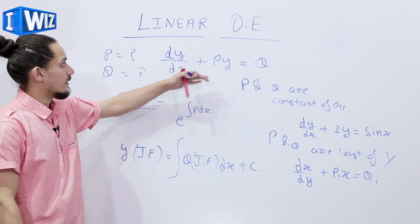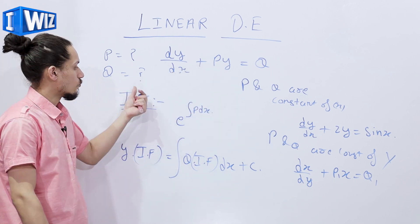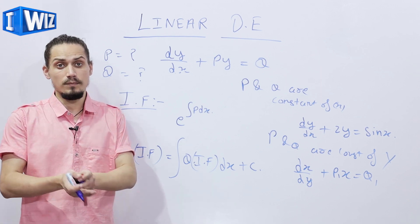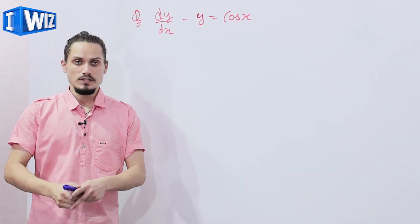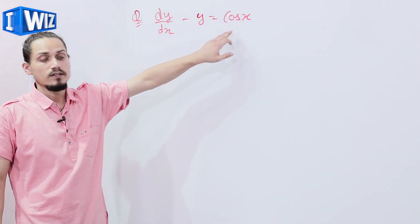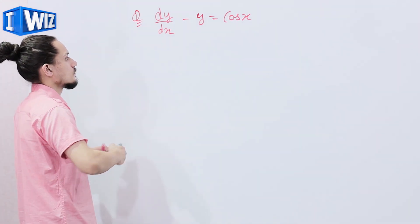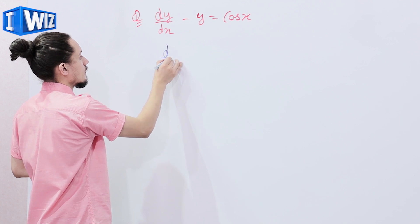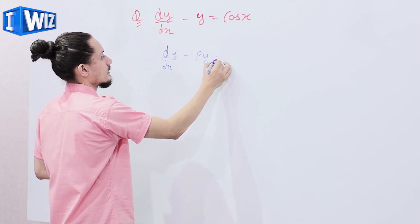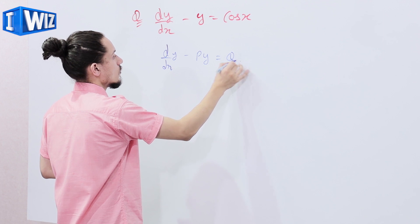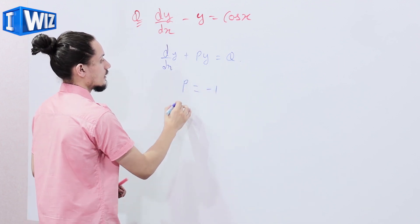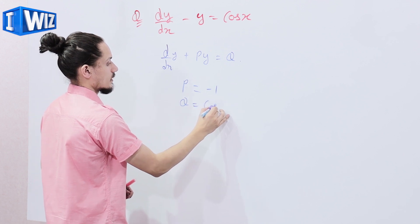Now we know what linear differential equations are and how to solve them to get a general solution. Let's look at some examples. The first example: we have dy/dx - y = cos(x). Comparing with dy/dx + py = q, we get p = -1 and q = cos(x).